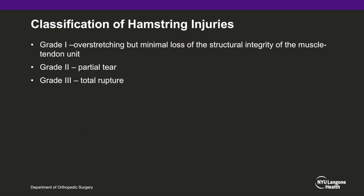There are multiple classification systems for hamstring injuries. Grade 1 represents overstretching but minimal loss of the structural integrity of the muscle-tendon unit. Grade 2 represents a partial tear, which is the focus of this case. Grade 3 represents a total rupture of the hamstring muscle.